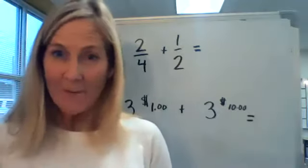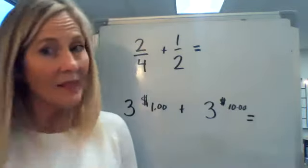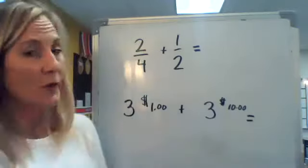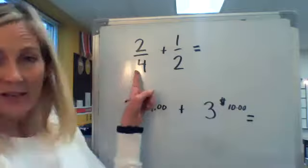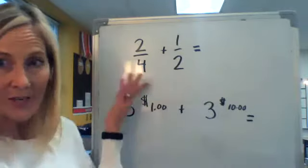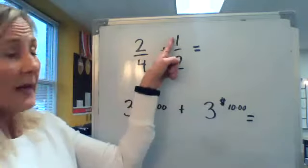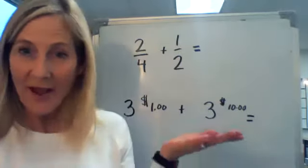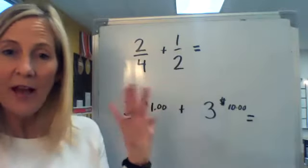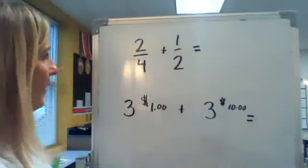Okay, fifth graders, we're talking about adding fractions with unlike units, really unlike denominators. We can use the word units and denominators interchangeably. This is telling me I have two of that unit, which happened to be fourths. This is telling me I have one of that unit, which happens to be halves. Units and denominators give us information about the value or amount that we're working with.